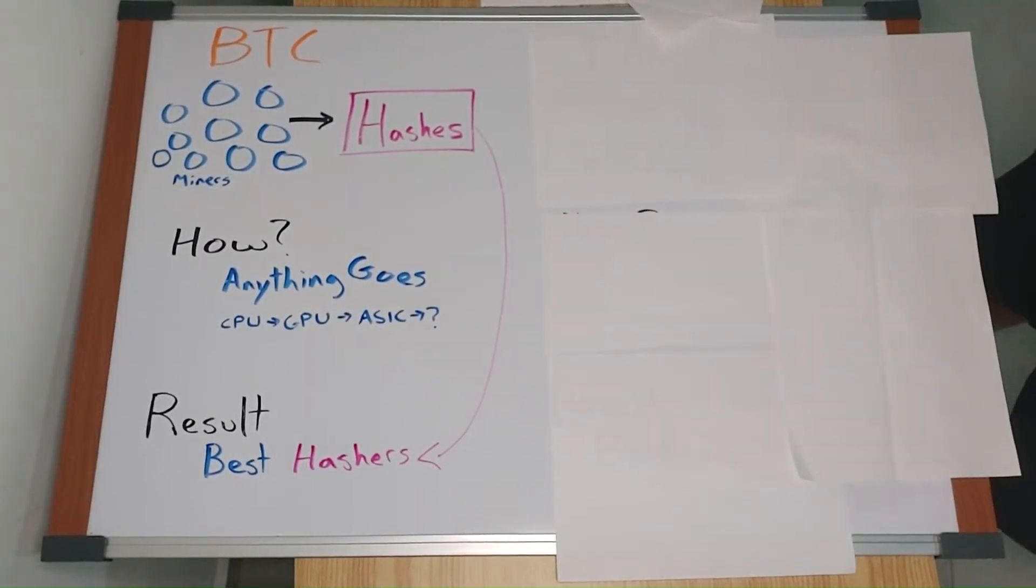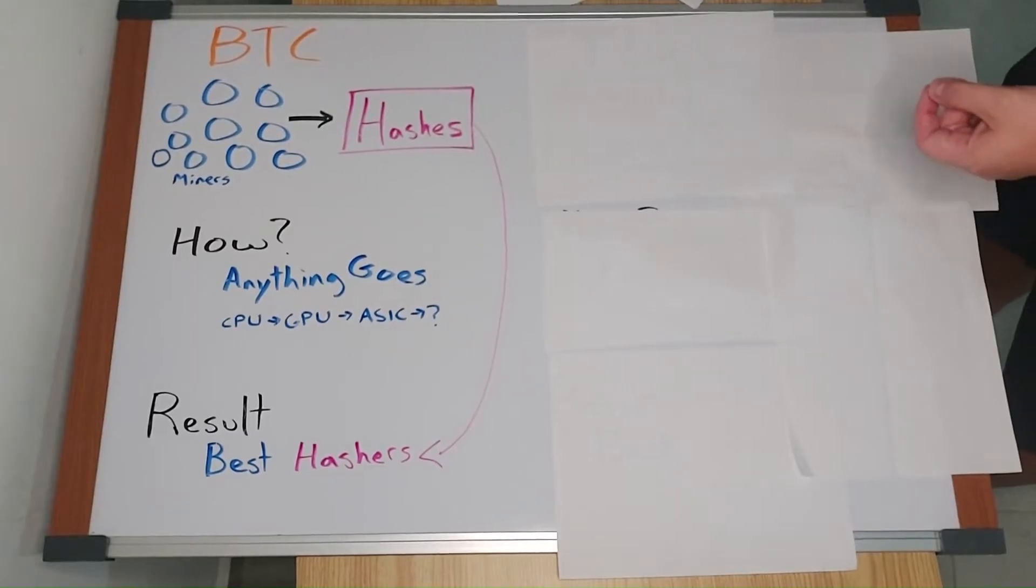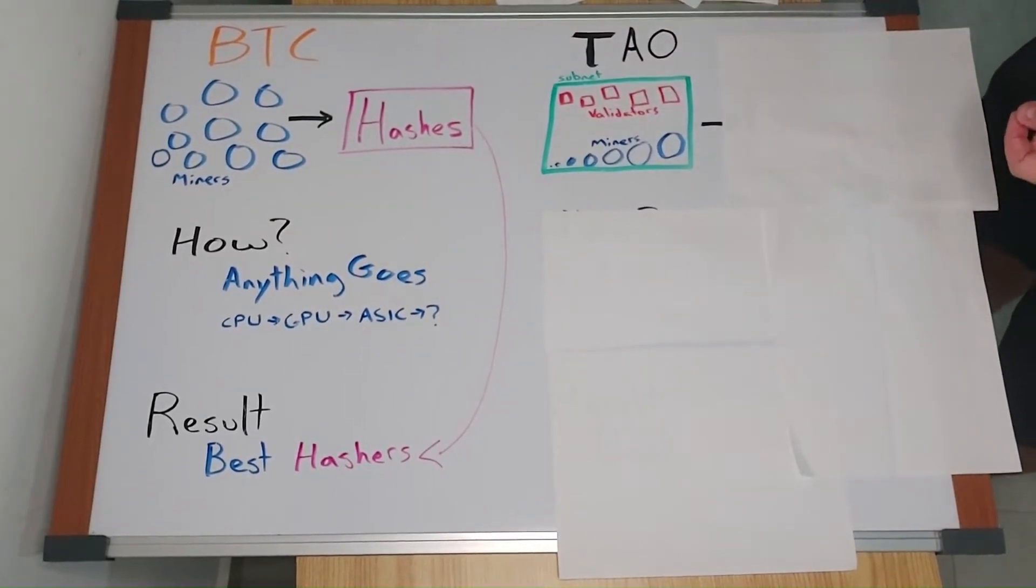Now let's look at BitTensor. BitTensor expands the type of work that miners can do. It expands it to anything that can be verified by code. Anything.